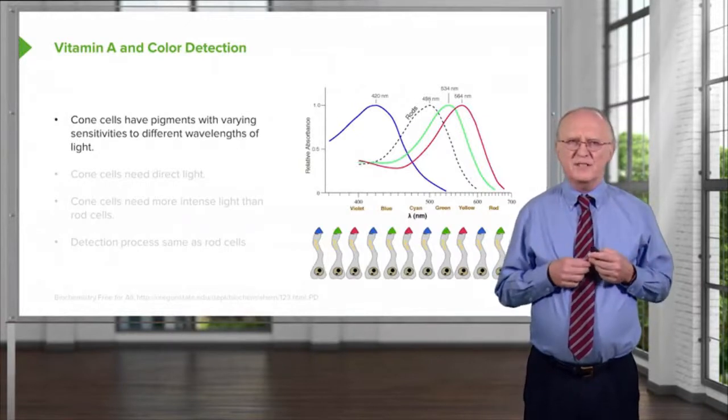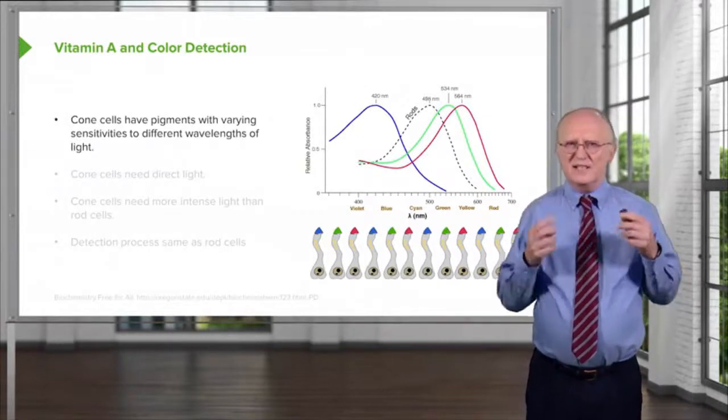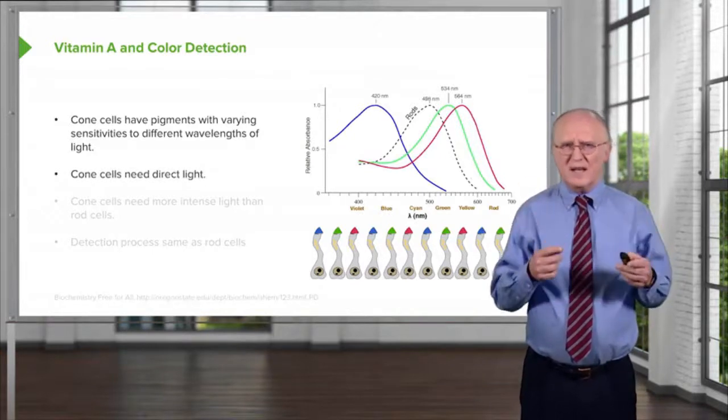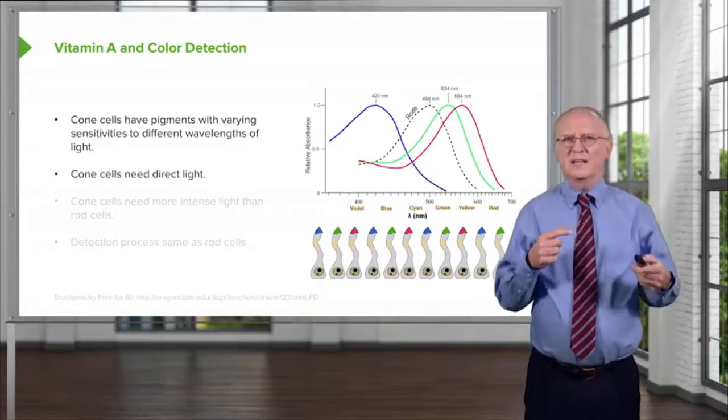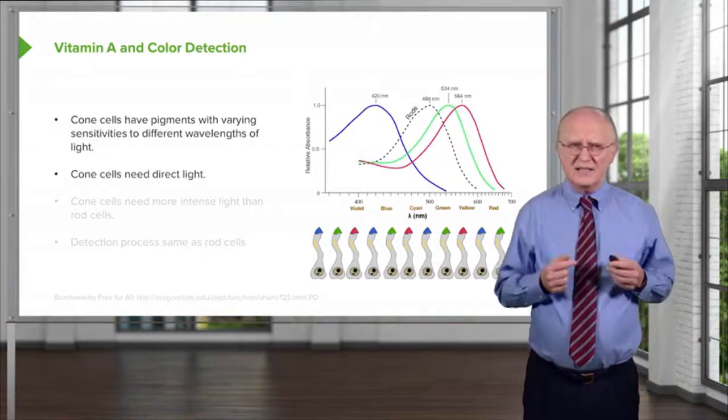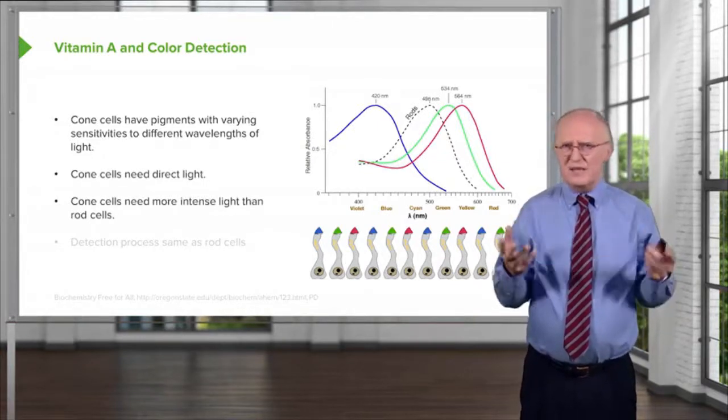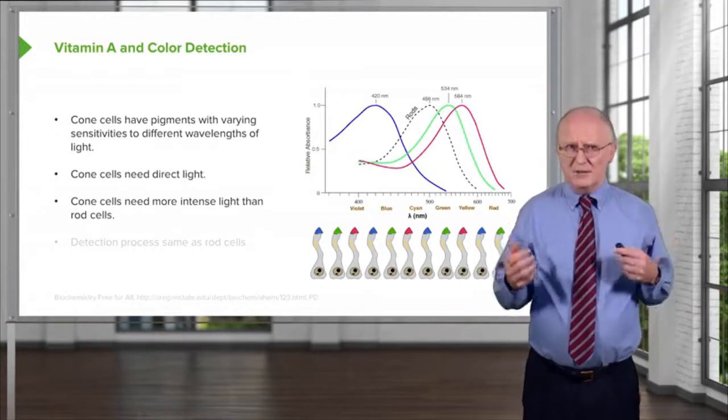As I said earlier, the cone cells have pigments that have varying sensitivity to different wavelengths of light. Cone cells need direct light and they need direct strong light in order to detect the colors that they detect. Cone cells need more intense light. What would stimulate a rod cell might not stimulate a cone cell.